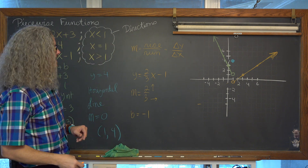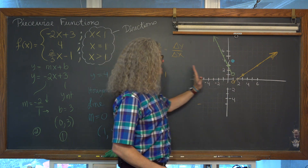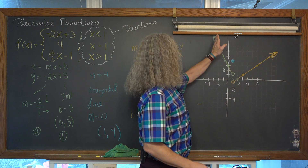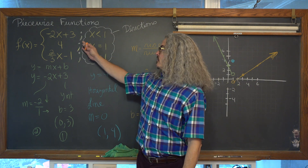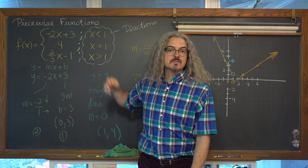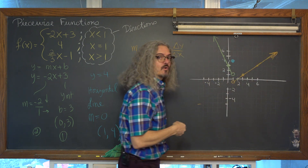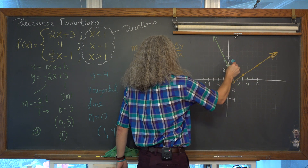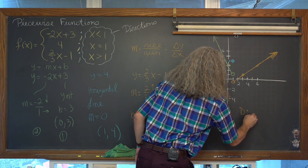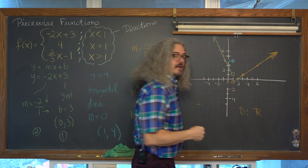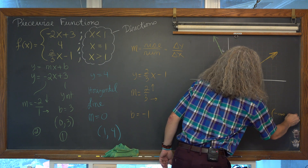What's the final domain of this graph? The domain is just looking at the graph horizontally — where along the x-axis can you look up or down and find the existence of the graph? The green arrow goes up and to the left forever, the orange line goes up and to the right forever, and there's a solid dot at x equals 1. So our domain is all real numbers — x is an element of all real numbers, or negative infinity to positive infinity.